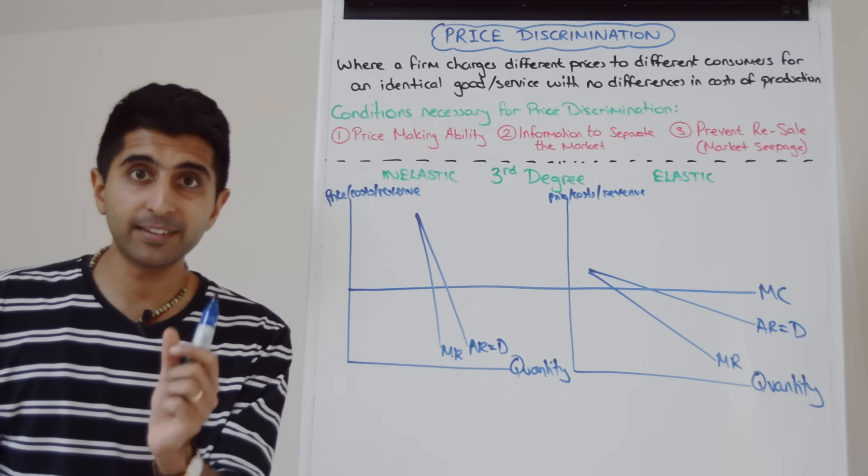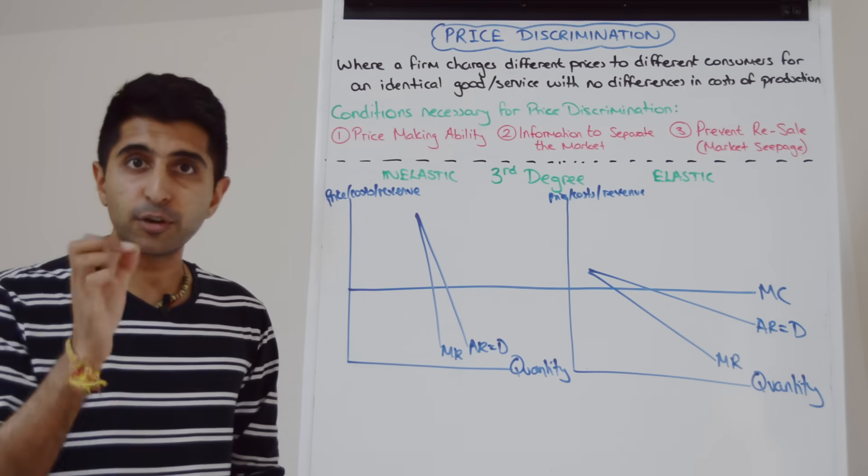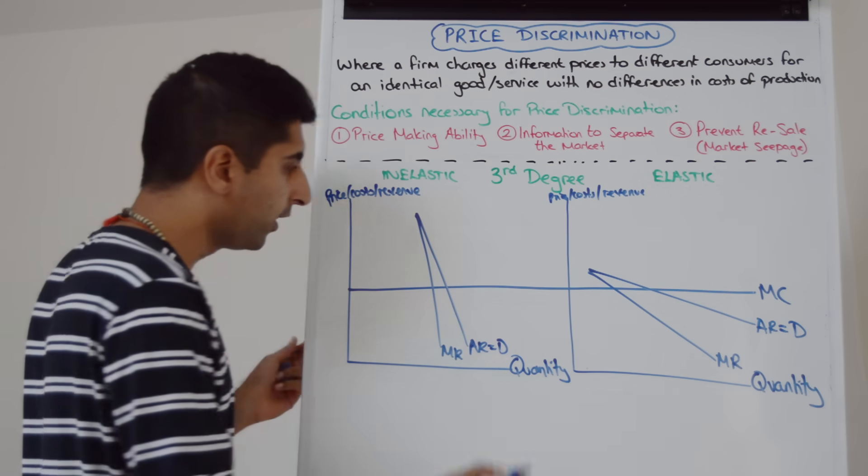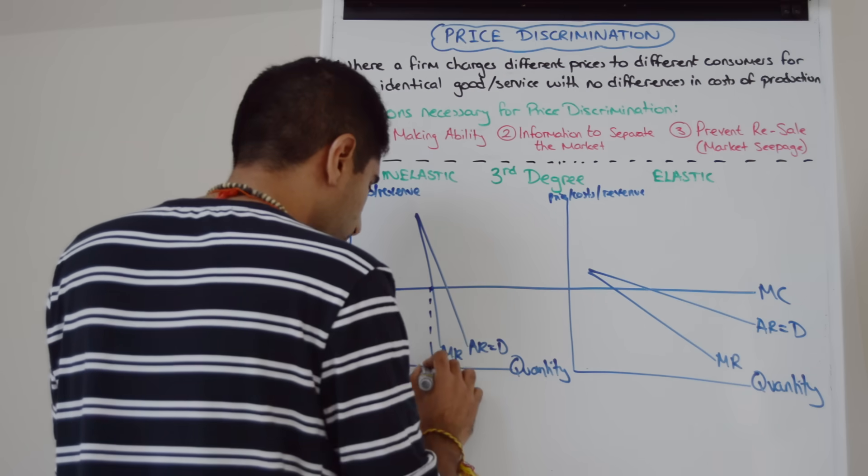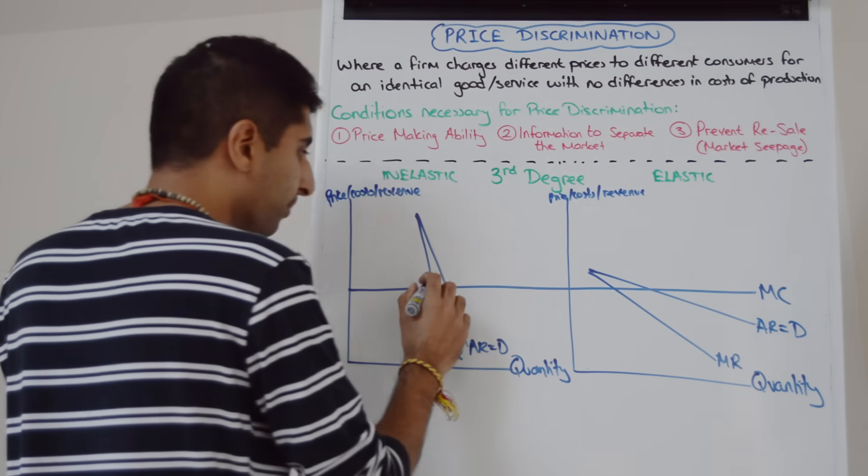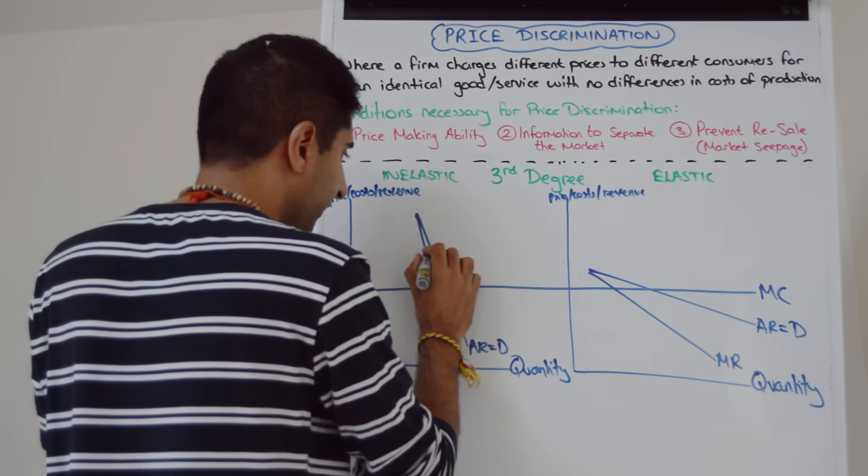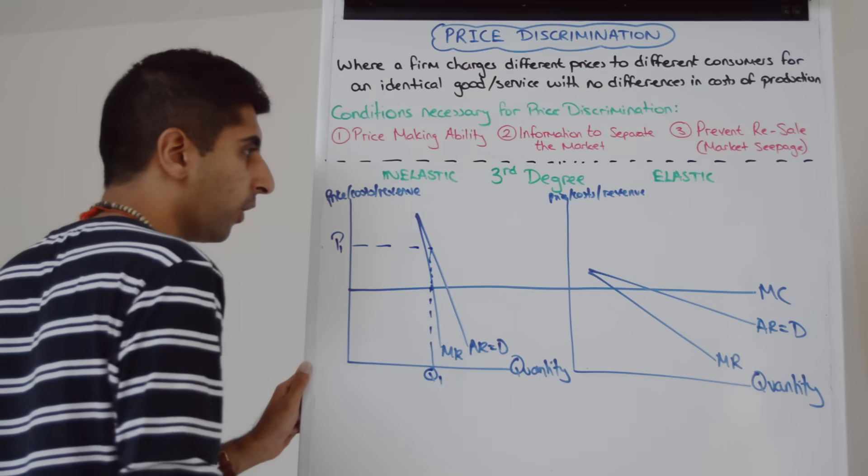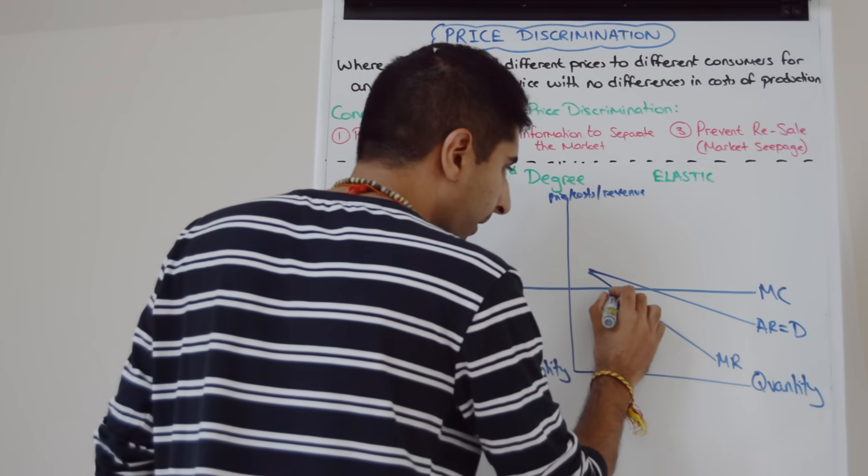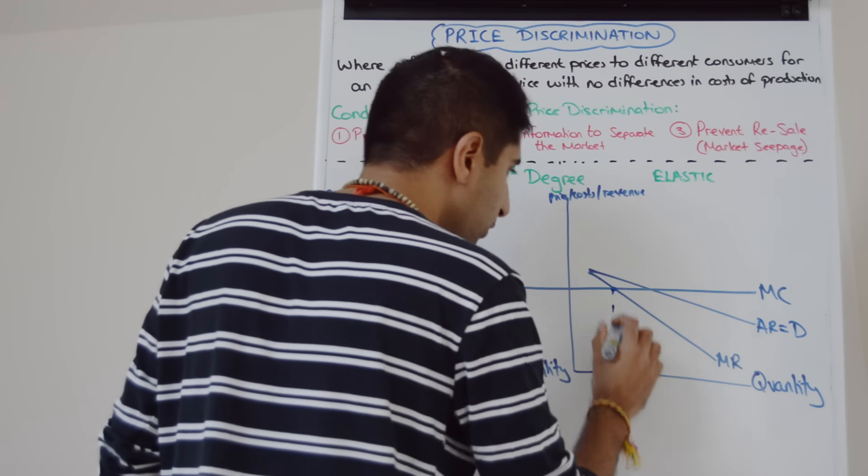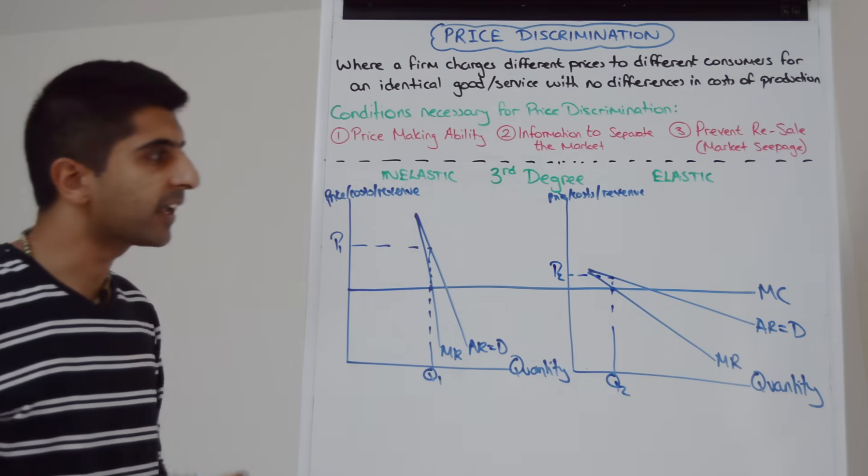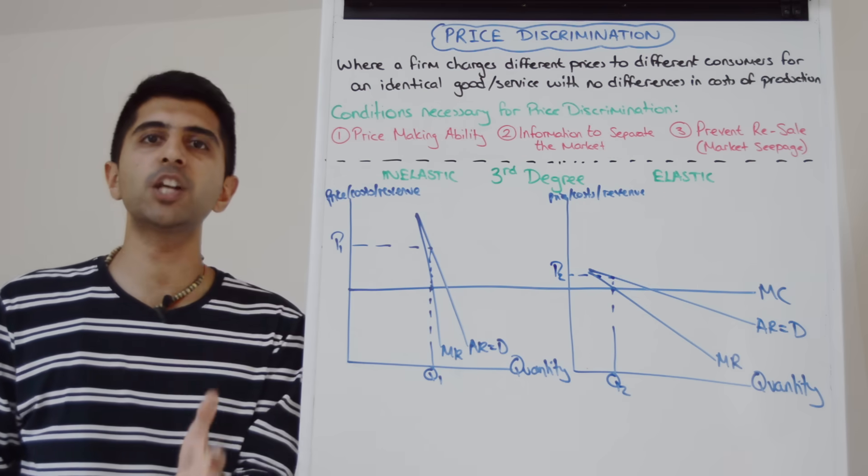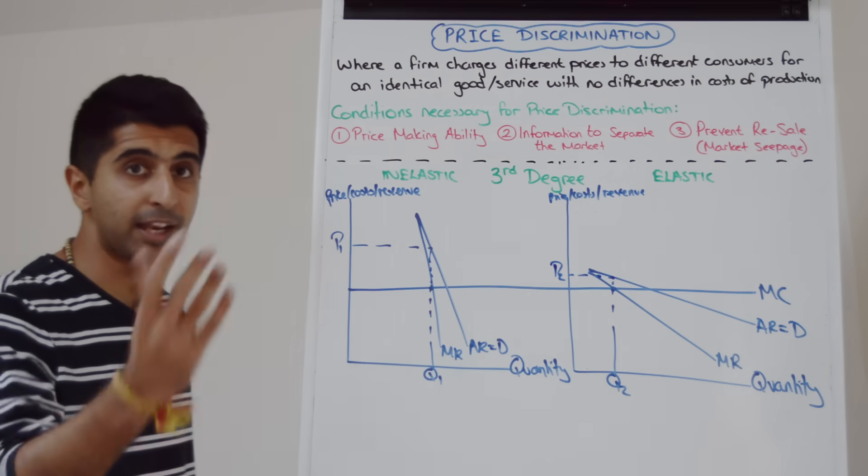Well what's a firm going to do? They're going to profit maximize in each case, charging and producing where MC equals MR. So let's take MC equals MR in both cases. Well that's here. Let's call that quantity Q1. They're going to read the price off the AR curve. That's going to take us to here. Let's call that price P1. Let's do the same thing over here. So MC equals MR is over there. Call that quantity Q2. The price, read off the AR curve, call it P2. And we can see very clearly the different prices being charged in the different markets depending on PEDs.